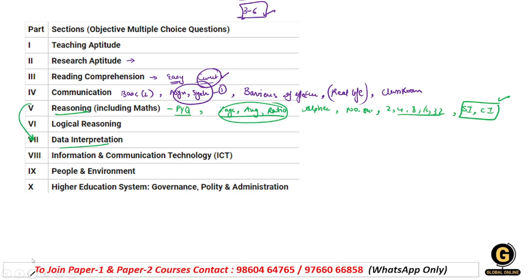Evening shift waale students ka bhi yahi kehna hai ki same pattern ko hi follow kiya gaya tha. Ab aate hain ek most important unit - logical reasoning. Students, logical reasoning se hameshaa ki tarah NTA ne ek question zaroor pucha hai - uska naam hai classical square of opposition. Is par detailed video hai, Ankita Seth ke naam se playlist milegi wahan check kar lijiye. Simple se simple language mein aapko bahut easy tarike se saare concepts samjhaye hain. Ismein aapko A, E, I aur O ke concept samajhne hain - sab kuch bahut zyada easy ho jaata hai.